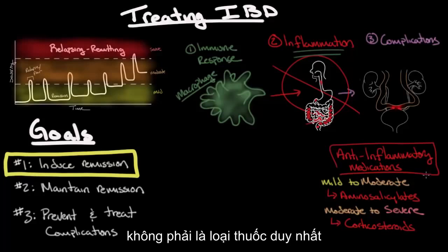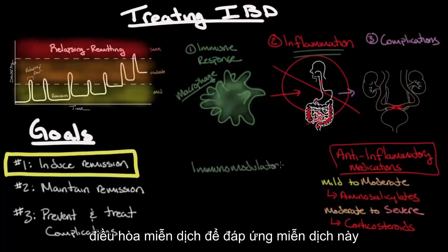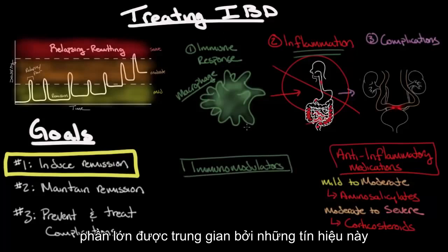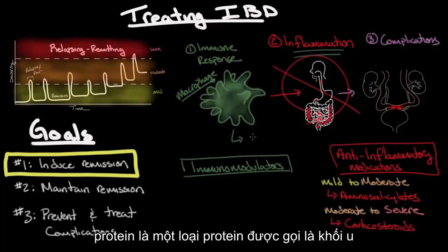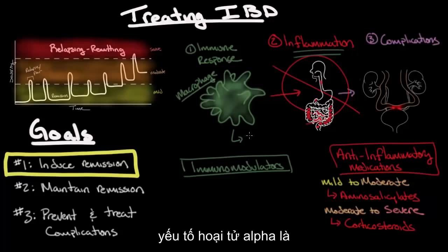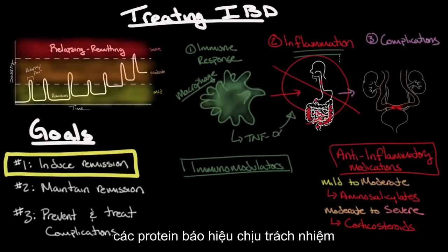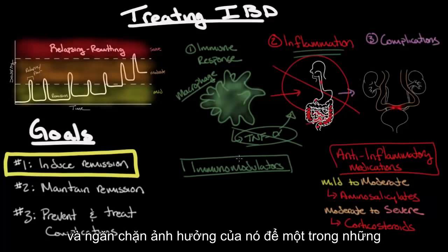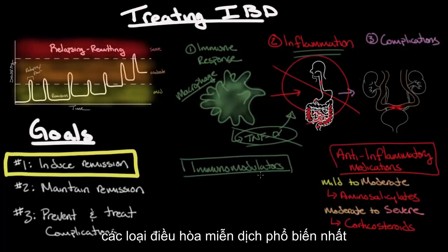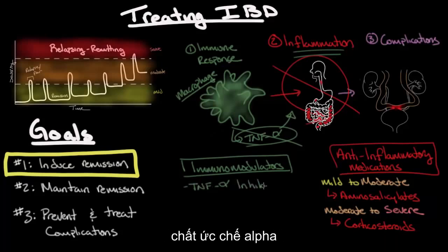This isn't the only type of medication that can be used to treat an acute flare. The other group are known as immunomodulators. This immune response is largely mediated by signaling proteins released by inflammatory cells such as macrophages. One of these signaling proteins is tumor necrosis factor alpha, abbreviated TNF-alpha, which is responsible for the inflammation. Fortunately, we have medications that can target TNF-alpha and prevent its effect. One of the most common immunomodulators used to treat an acute flare are the TNF-alpha inhibitors.